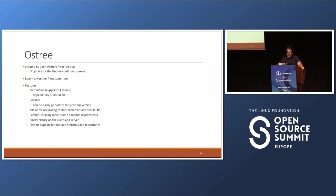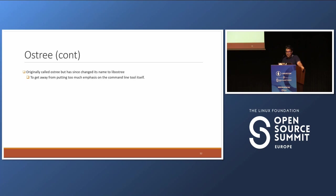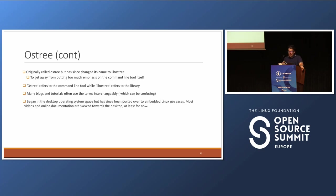OSTree was initially driven by server needs but was later ported to the embedded Linux space. OSTree is primarily focused on the delivery and deployment of file system trees. OSTree was originally called OSTree but has since changed its name to LibOSTree, basically to get away from putting too much emphasis on the command line tool itself. OSTree refers to the command line tool, while LibOSTree is the library. Many blogs and tutorials use the terms interchangeably, which can be very confusing. OSTree began in the desktop operating system space but has since been ported into embedded Linux use cases. Most videos and online documentation are skewed towards the desktop.